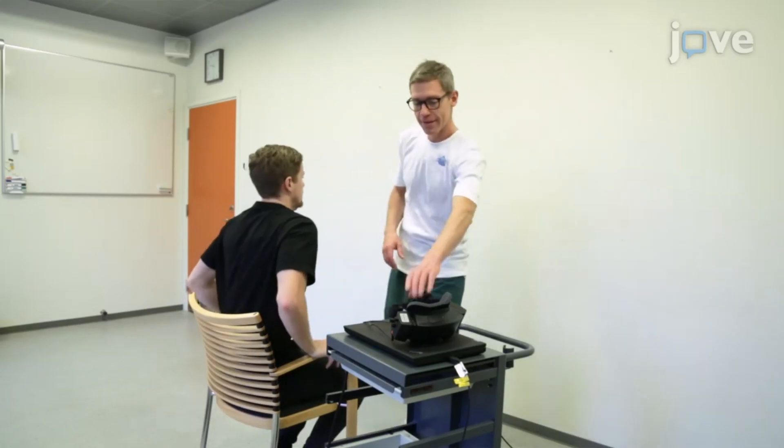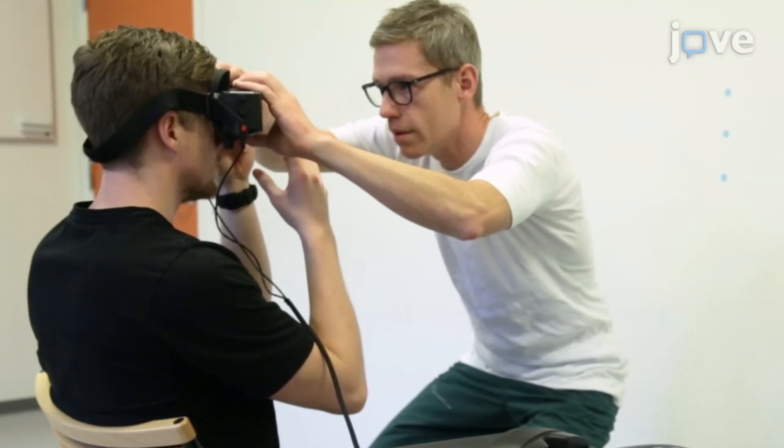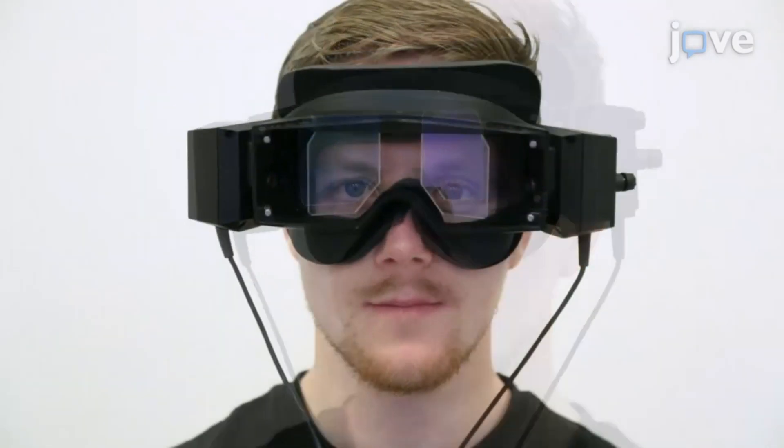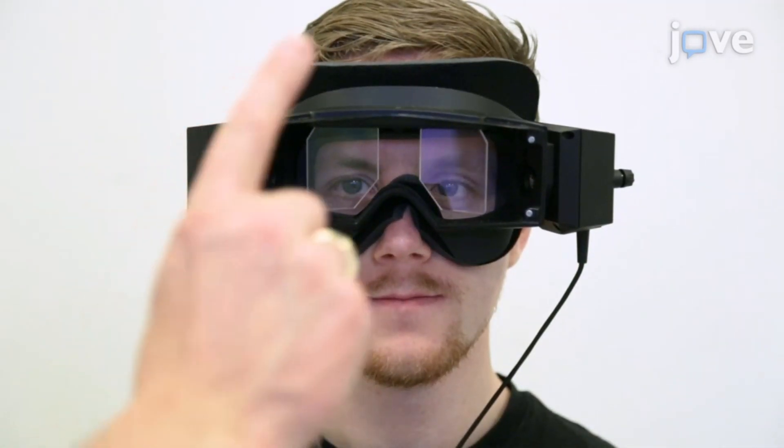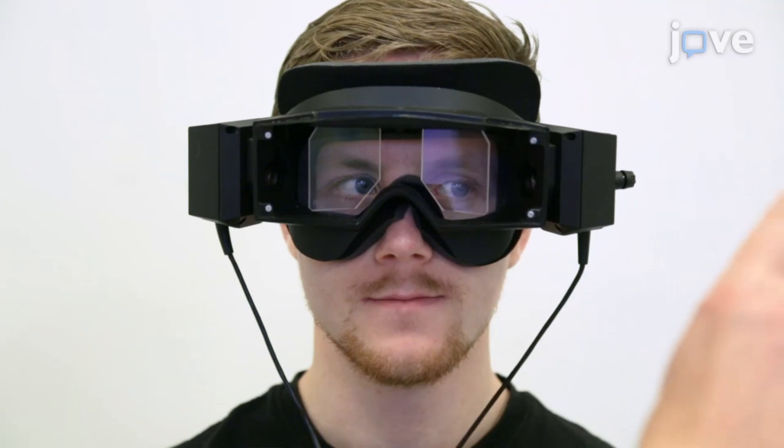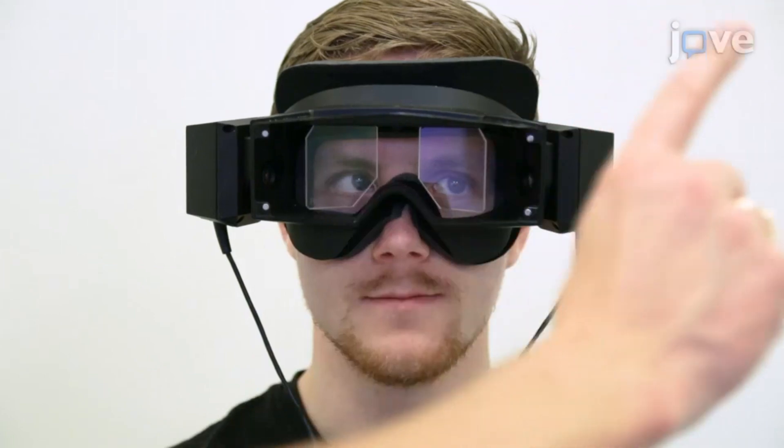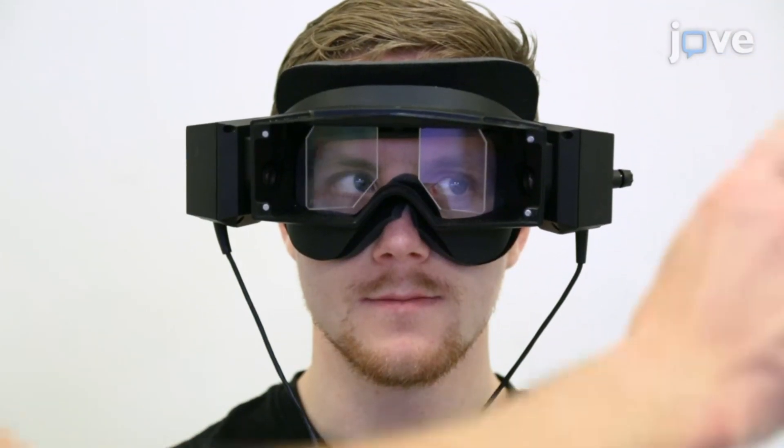Begin by escorting the participant to a well-lit screening room and mount video frenzel goggles. Perform a gross eye movement exam by asking the participant to move their eyes in the vertical and horizontal planes to the outer edge of the eye sockets to ensure no eye muscle palsies are present.